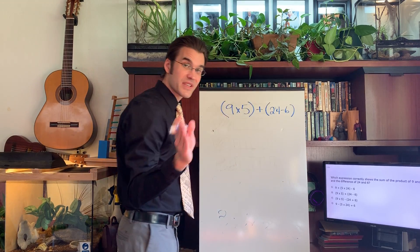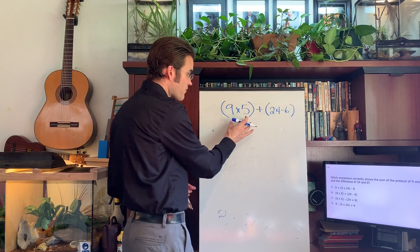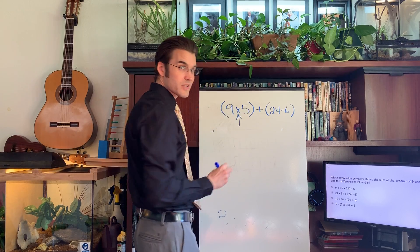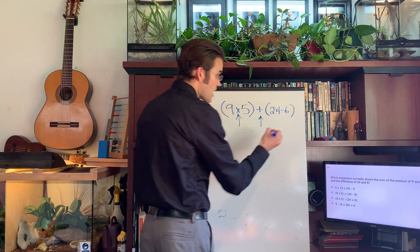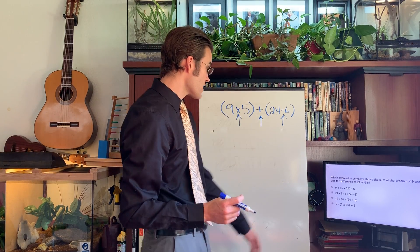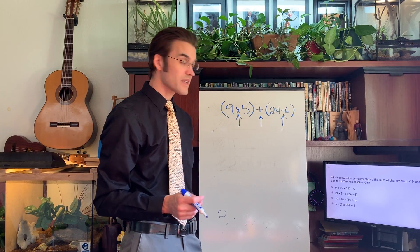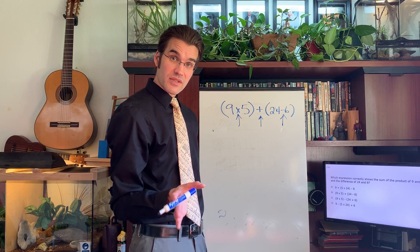24 and six, because remember difference is subtraction. So we really had to think this through. We had to realize what product meant, product was our times, our sum is our addition, and our difference is negative. So the answer would be nine times five plus 24 minus six, which is B. Practice writing some number sentences today. Just do a couple.